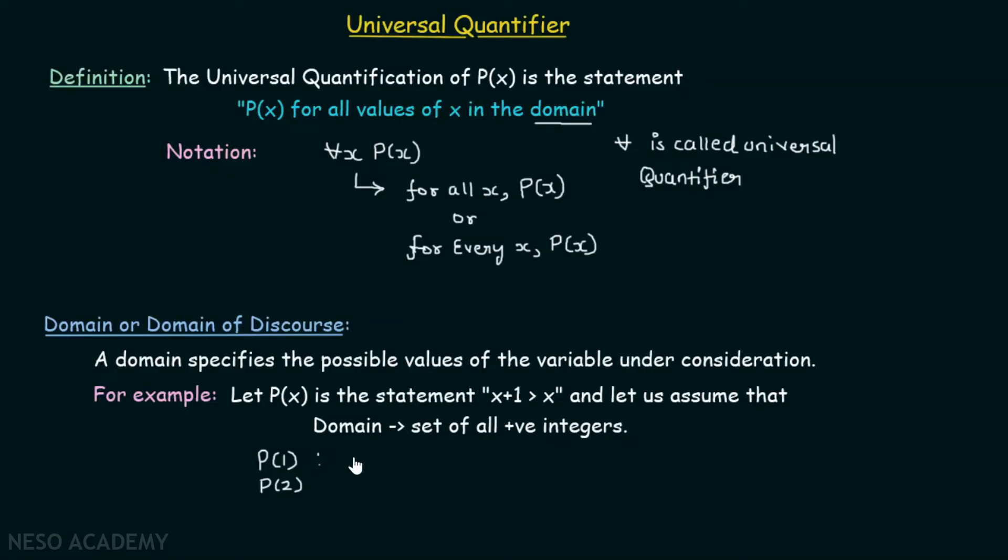So here we can replace this x by one. This becomes one plus one greater than one. This is true of course. And here we can replace x by two. This becomes two plus one greater than two. And this is also true. Similarly, for the rest of the positive integers also, this statement is satisfied. Hence, we can say that P(x) is true for all values of x under the domain that is set of all positive integers.